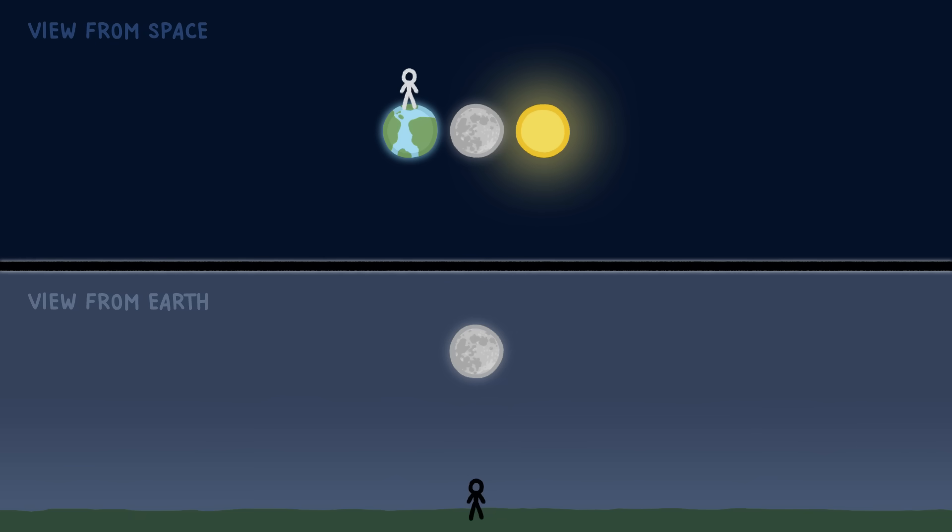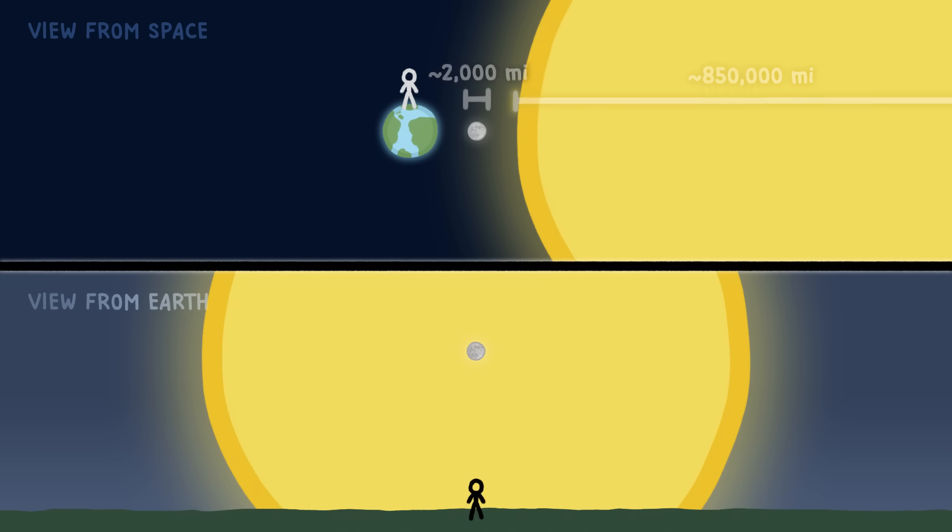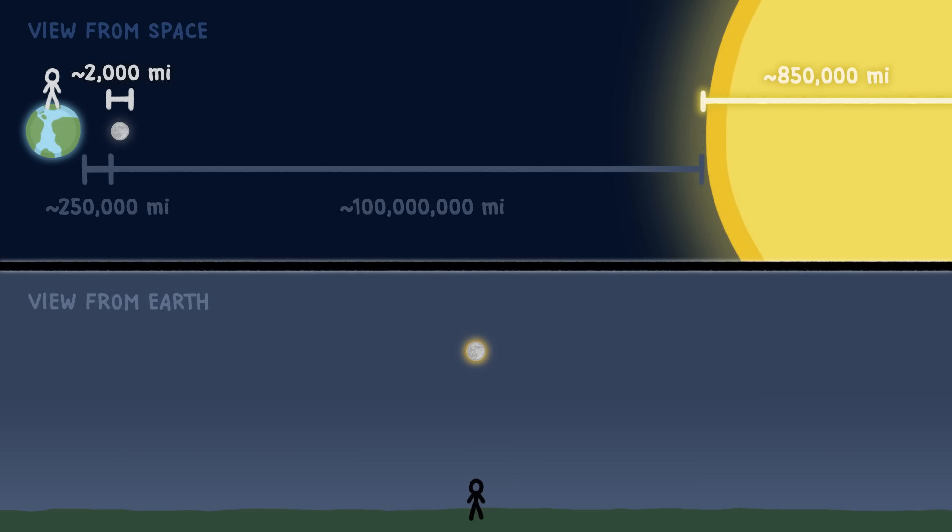This disparity in total eclipses can only happen because of a celestial coincidence. Although the sun is 400 times bigger than the moon, it's also 400 times farther away from us, so as a result, from here on Earth, the sun and moon appear to be almost exactly the same size.